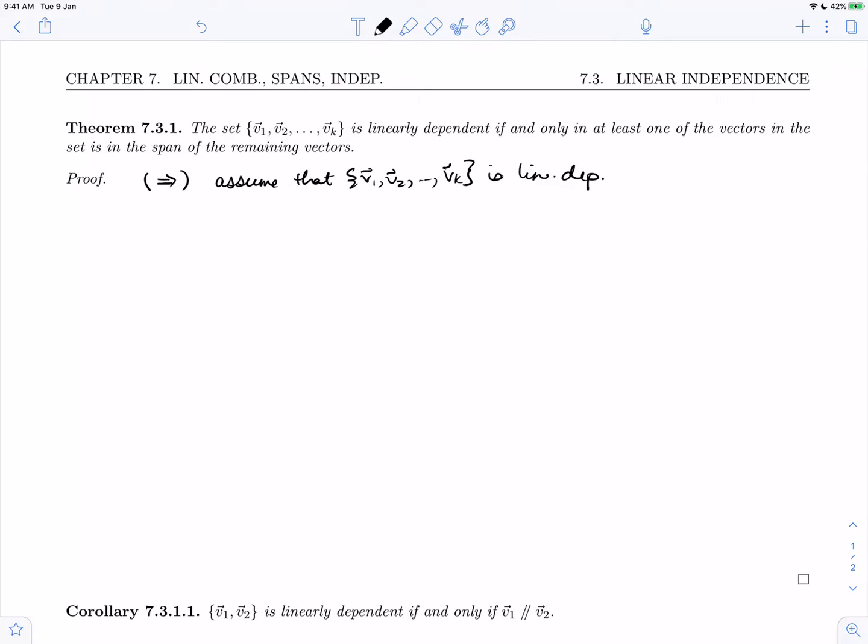Which means that the dependence equation a1v1 plus a2v2 up to akvk equals 0 has a non-zero solution. So without any loss of generality let us assume that it is a1 that is non-zero. And if it's not, well we can just write the vectors in another order so we do have the first coefficient as non-zero.